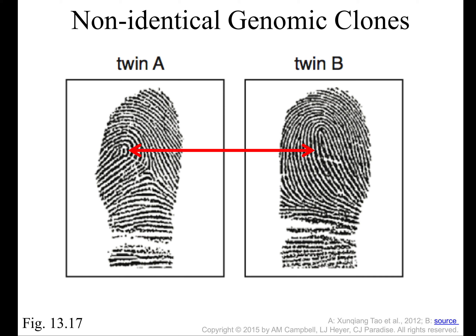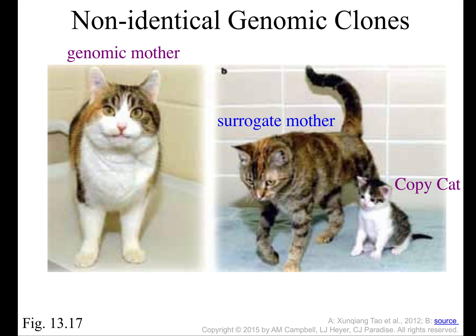An example of this is the fingerprints of two twins. This is the same finger on twin A versus twin B — you can see they don't have the same fingerprint. The fingerprint is produced as a series of random events in the cell pathway that produces the skin.